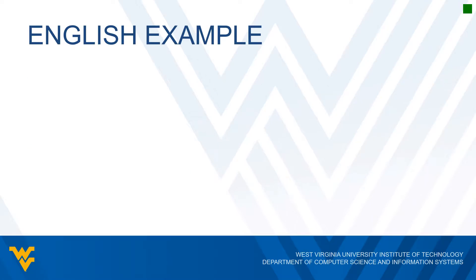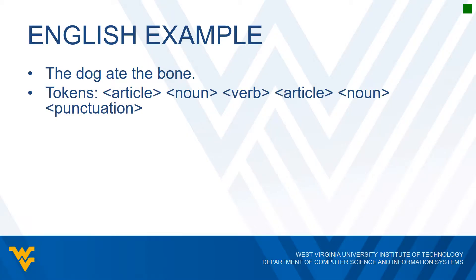Let's use an English example to show this process. Let's say we have the statement: 'The dog ate the bone.' We would still do the first step, the scanning process, to get our tokens. So in this case, 'the' would be an article, 'dog' would be a noun, 'ate' is a verb, 'the' is an article again, 'bone' is a noun, and the period is punctuation. We can then look at the grammar rules and determine if this is a valid statement in the English language.